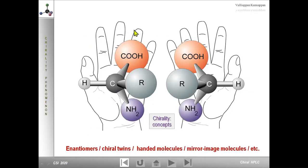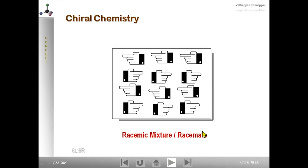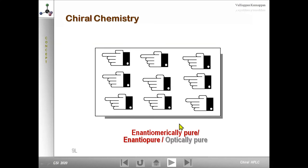On chirality: if I have a molecule and its mirror image, I refer to such a pair as enantiomers — chiral twins, handed molecules, or mirror image molecules. The enantiomeric pair is described by absolute configuration in R and S. A racemic mixture has equal numbers of each hand — optically inactive, called a racemate. Enantiopure means all molecules are on one side — no impurity at all.